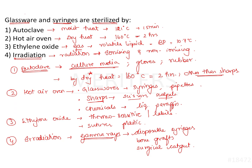The question asks about sterilization of glassware and syringes. For glassware, the best method of sterilization is dry heat — that is, hot air oven — which sterilizes all types of glassware like pipettes, test tubes, flasks, and syringes. Therefore, the correct answer is option two: hot air oven.